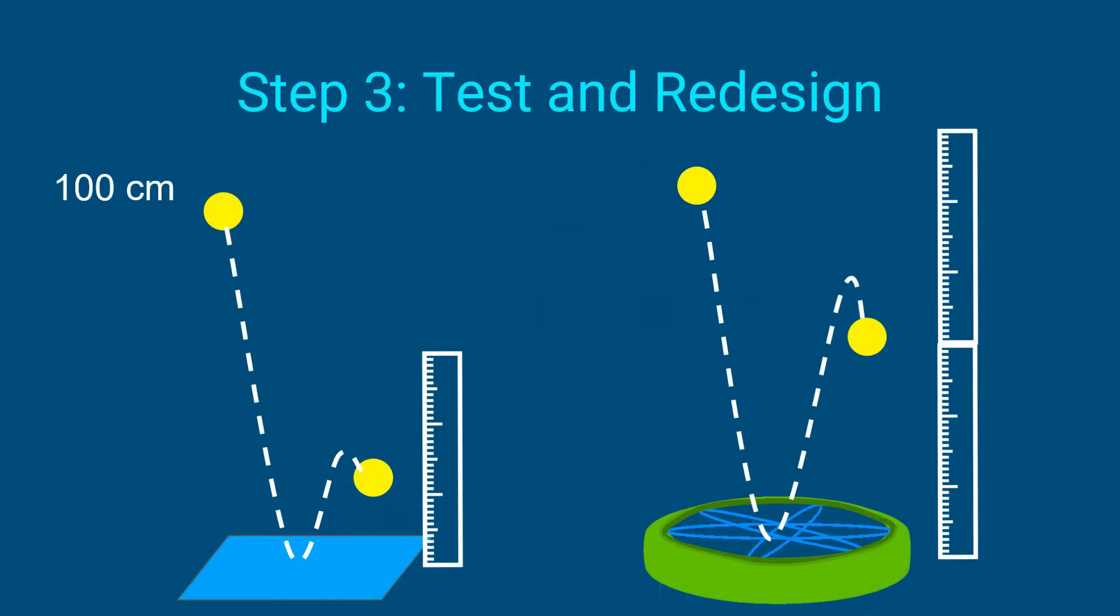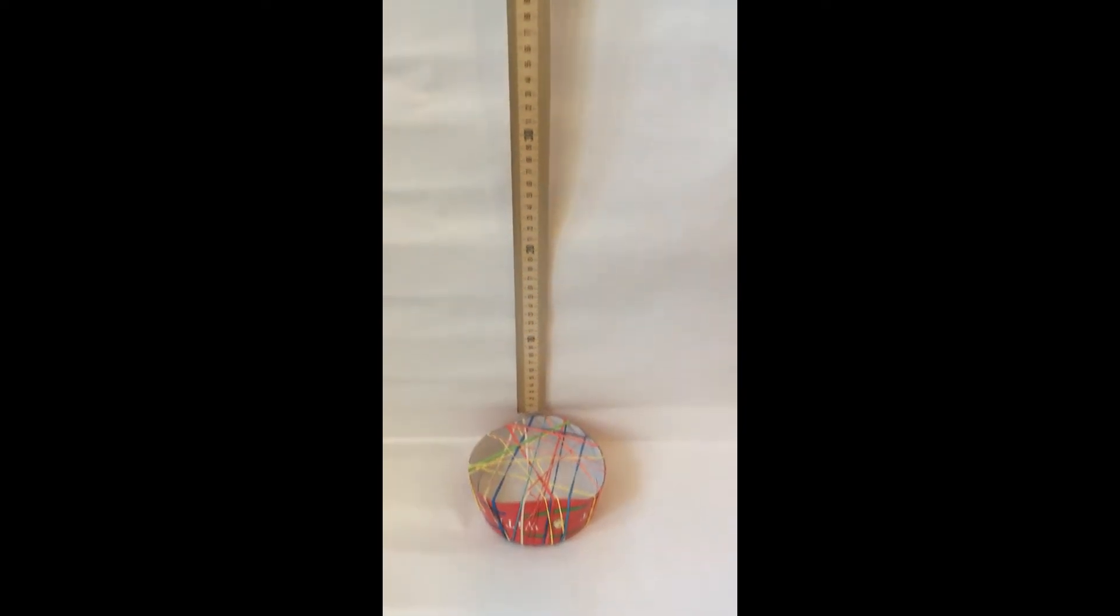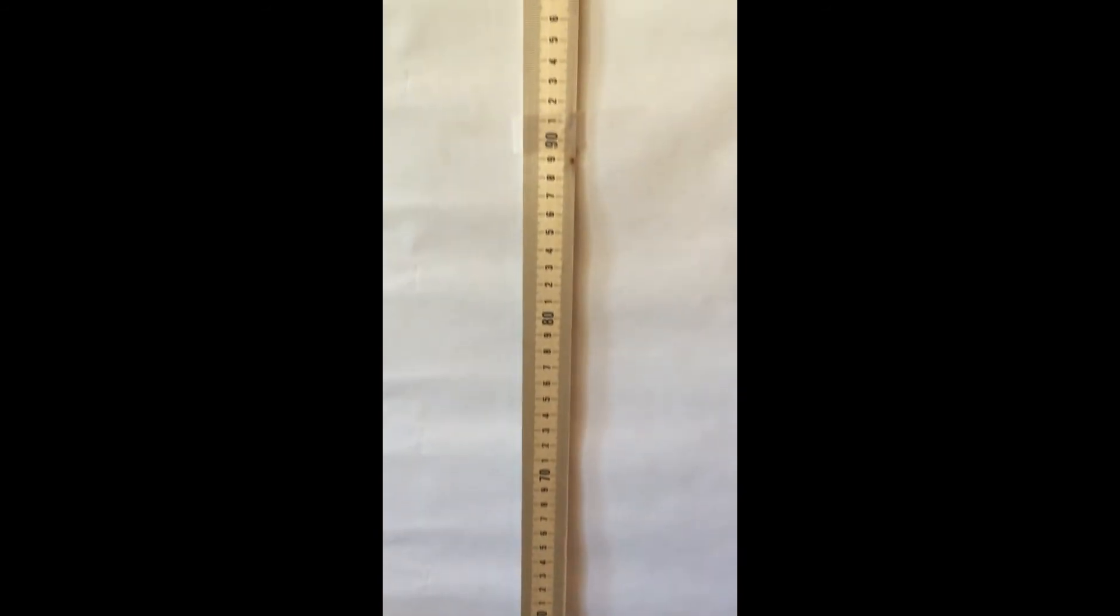Once your device is built, it's time to test it. Pick a clear location to test your device and choose an object to drop that's safe. We recommend a softball or bean bag so that it doesn't bounce up and break anything. First, drop your object from a height of 100 centimeters onto the ground and measure how high it bounces back up, if it does.